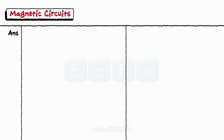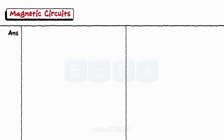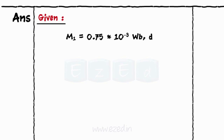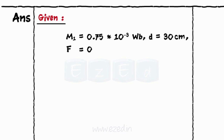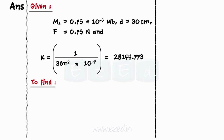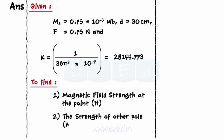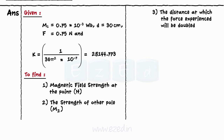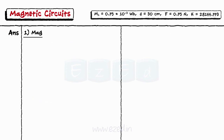We have: strength of pole 1, M1 = 0.75 × 10⁻³; distance between 2 poles D = 30 centimeters; force F = 0.75 Newton; and constant K = 28144.773. We first find the magnetic field strength — it is given as the ratio of force experienced to the pole strength, and comes out to be 1000 N per Weber.